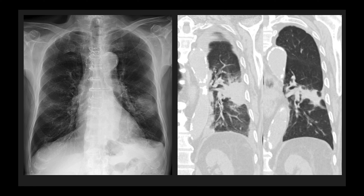Sometimes pneumonias can be round, and they're no different from other community-acquired pneumonia except that on chest x-ray and even on CT we can confuse these round pneumonias for lung cancers because of their round, mass-like appearance. But this one had a clinical history that supported pneumonia, so we followed it with CT and you could see it got smaller on follow-up.